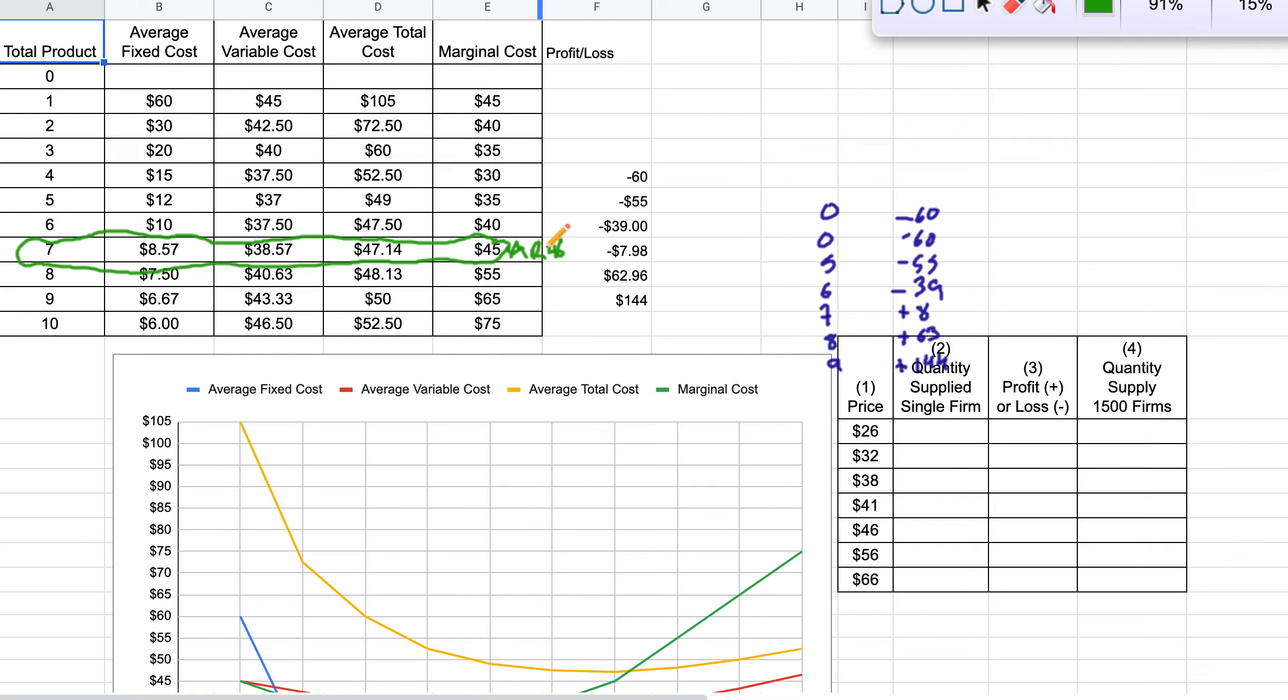And we're going to sell them for $46. They cost us $47.14 to make those. So we're losing money. Not a lot of money, but we're losing $8 every day.